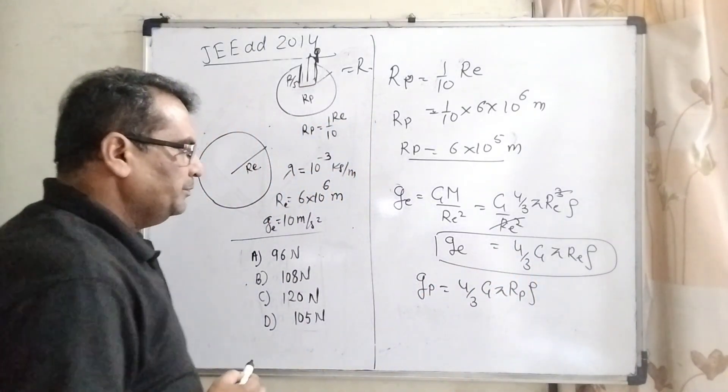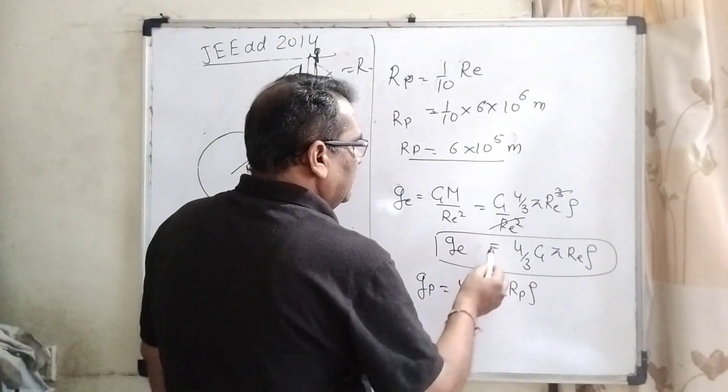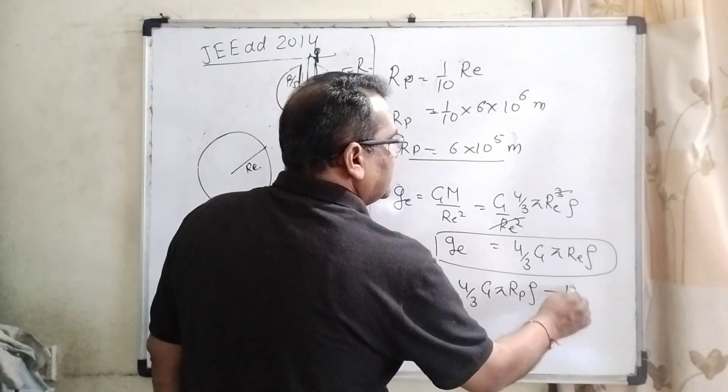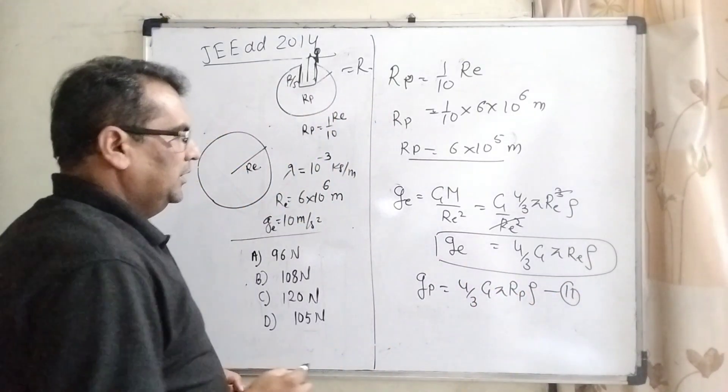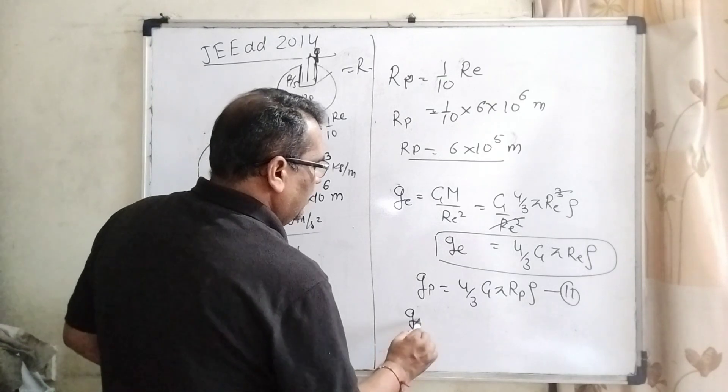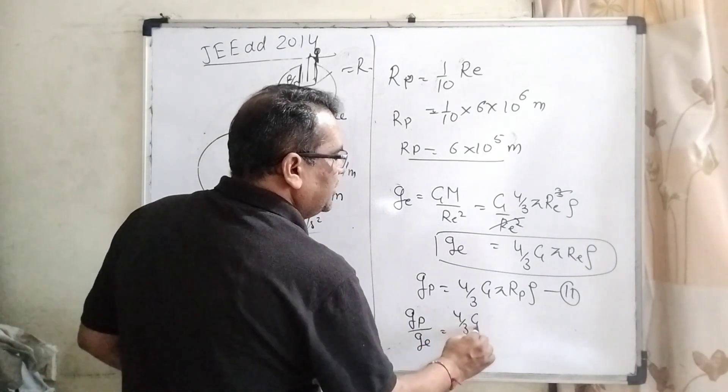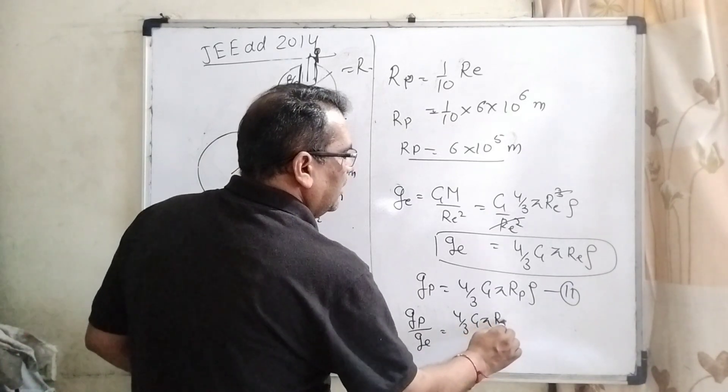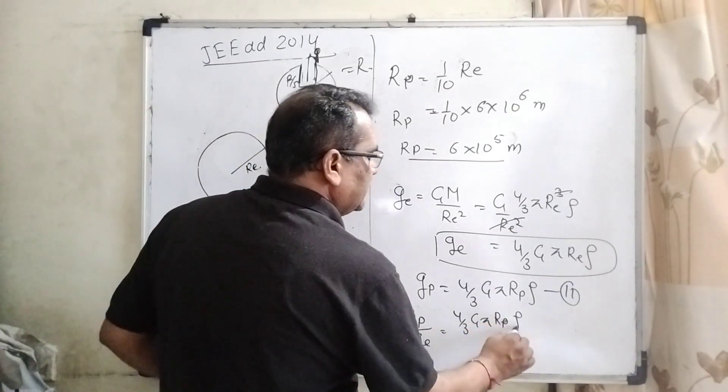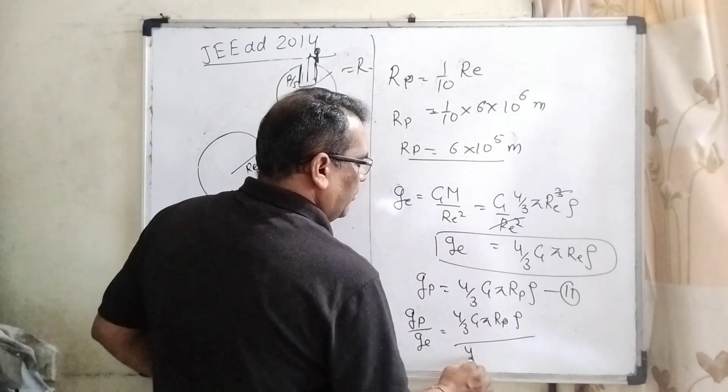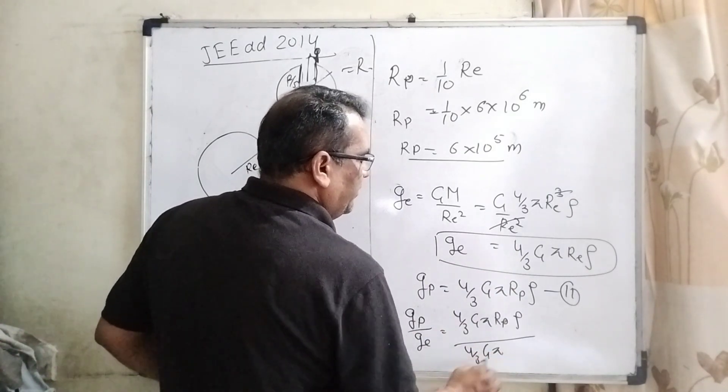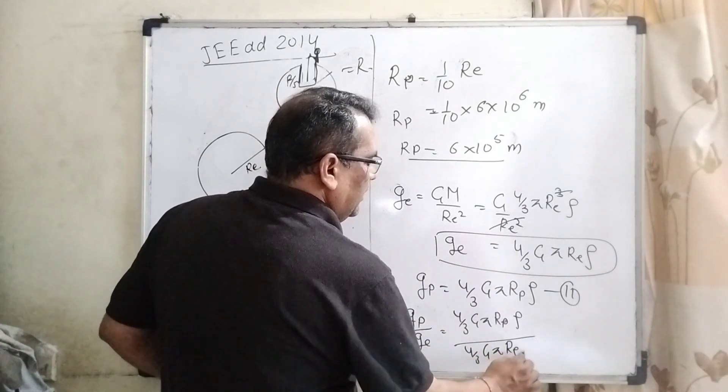Then, divide the first and second term. gP upon gE, what is gP? 4 by 3 G pi, R radius at the planet and density. Here again, 4 by 3 G, pi, Re and density.